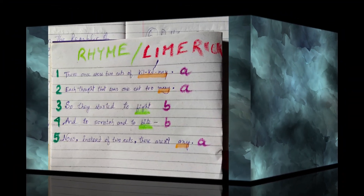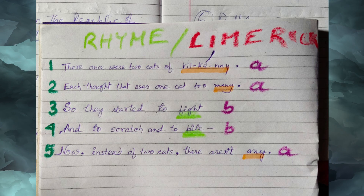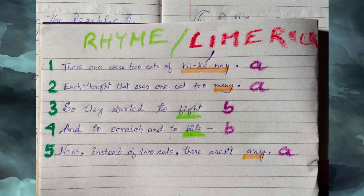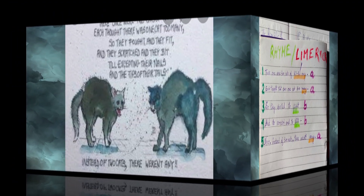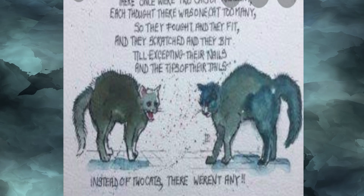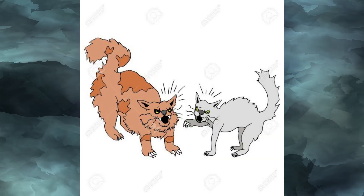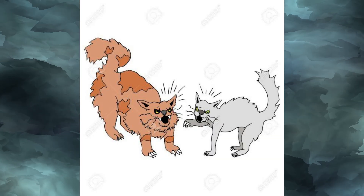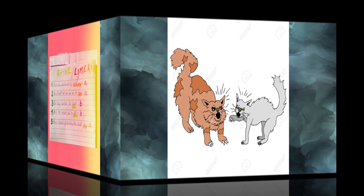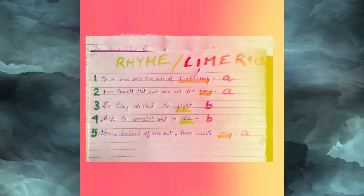Now recite with me. There once were two cats of Kilkenny. Each thought there was one cat too many. So they started to fight and to scratch and to bite. Now, instead of two cats, there are not any.